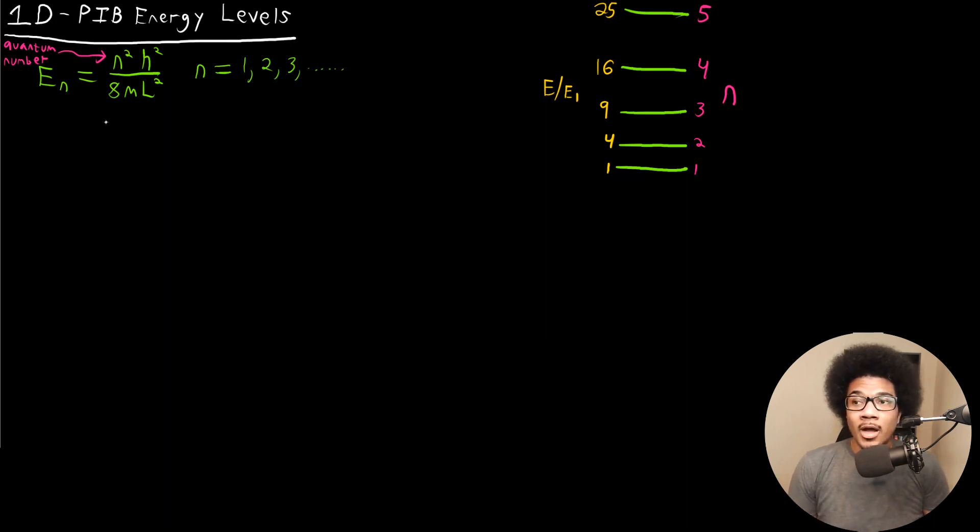The first thing that we really should tease out here is that if the lowest possible value for this integer is one, then that means the lowest possible energy is not zero. If we plug in one here, we don't get zero. And that's actually very different from classical mechanics.